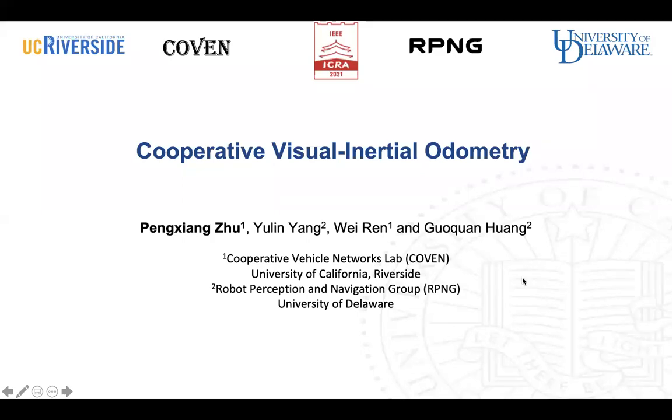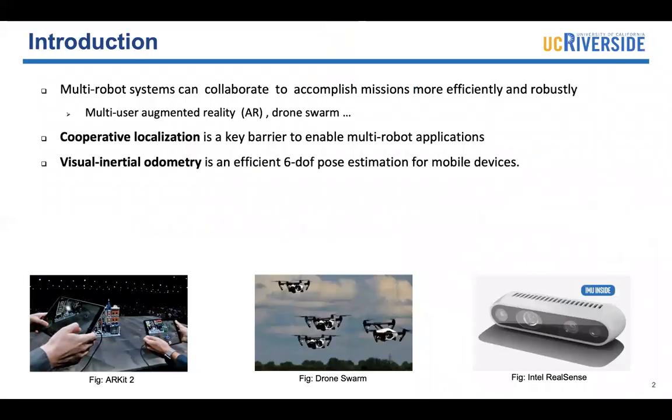Hello everyone. My name is Peng Shang Zhu. Today I will talk about cooperative visual inertial odometry. Multi-robot systems that have the ability of communication and perception can collaborate to accomplish missions more efficiently and robustly. Cooperative localization is a technique to improve the localizing accuracy for the whole group. It's an essential part to ensure the successful completion of multi-robot applications.